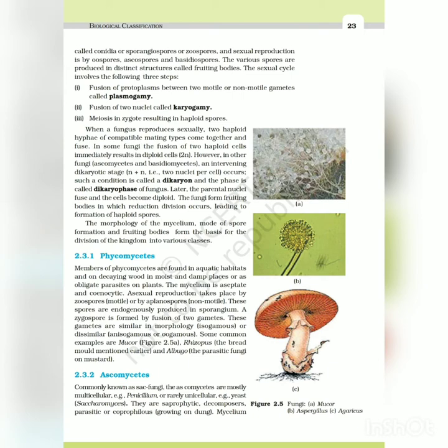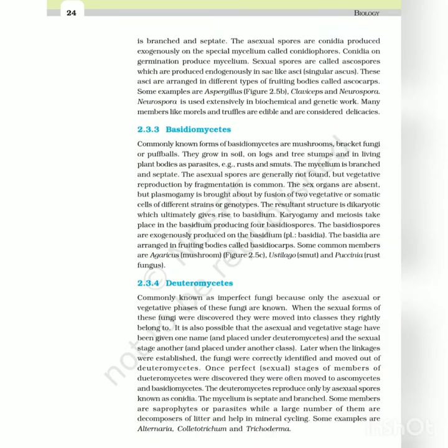Ascomycetes - commonly known as sac fungi, the ascomycetes are mostly multicellular (e.g., Penicillium) or rarely unicellular (e.g., yeast, Saccharomyces). They are saprophytic, decomposers, parasitic or coprophilous (growing on dung). Mycelium is branched and septate. The asexual spores are conidia produced exogenously on the special mycelium called conidiophores. Conidia on germination produce mycelium. Sexual spores are called ascospores which are produced endogenously in sac-like asci (singular ascus). These asci are arranged in different types of fruiting bodies called ascocarps. Some examples are Aspergillus (Figure 2.5B), Claviceps and Neurospora. Neurospora is used extensively in biochemical and genetic work. Many members like morels and truffles are edible and are considered delicacies.